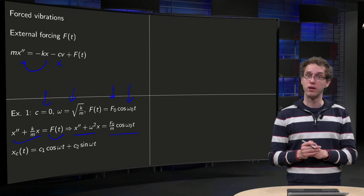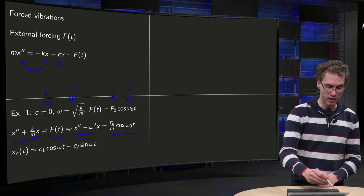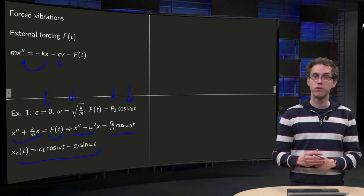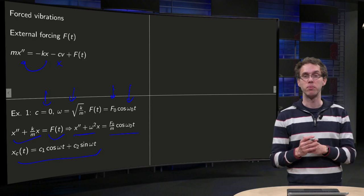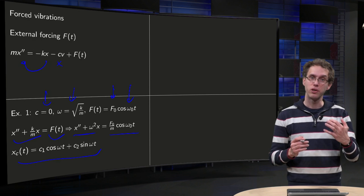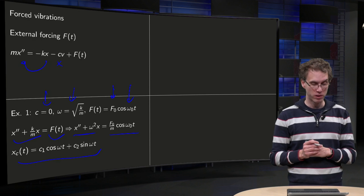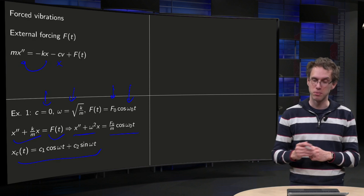Solve the complementary equation first, so we get xc. For that we solve x double dot plus omega squared times x equals zero, so we get x(t) equals c1 times cosine omega t plus c2 times sine omega t.